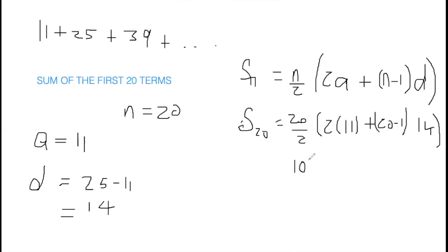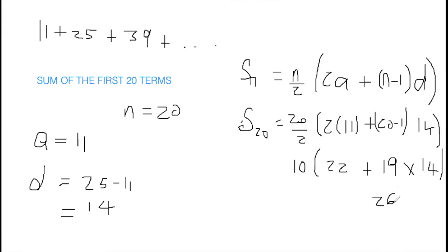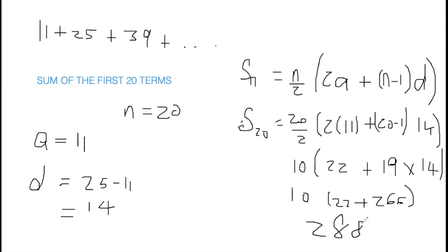Now 20 divided by 2 gives us 10. 2 times 11 is 22. 20 minus 1 is 19, multiplied by 14. So multiplying 19 times 14 gives 266, plus 22. We have this in brackets with the 10 outside. Then 22 plus 266 gives us 288, multiplied by 10 gives us 2,880. And that's the sum of the first 20 terms.